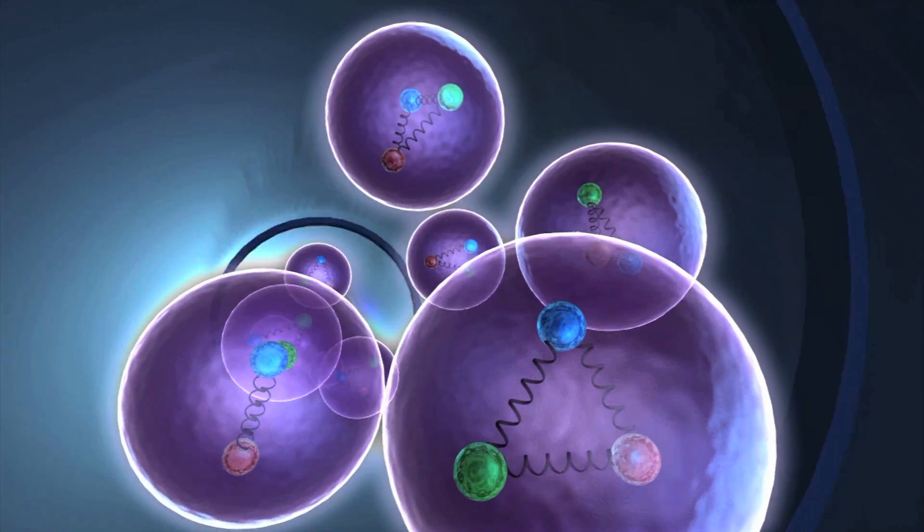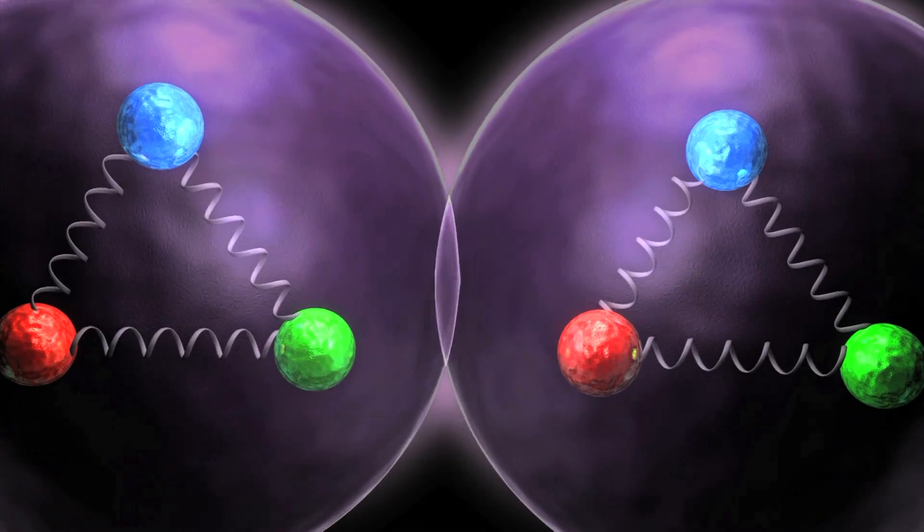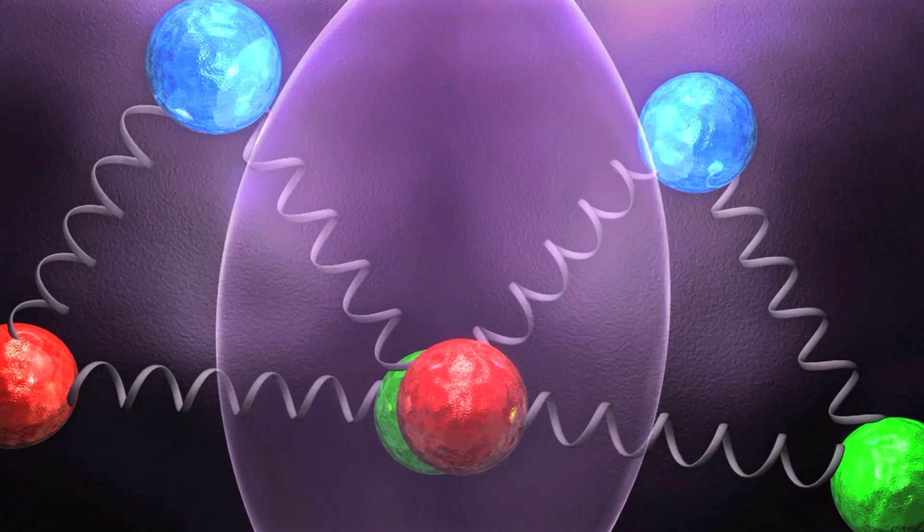The scientists send protons racing around the Large Hadron Collider at nearly the speed of light. The protons smash into each other with enough energy to create a Higgs boson.